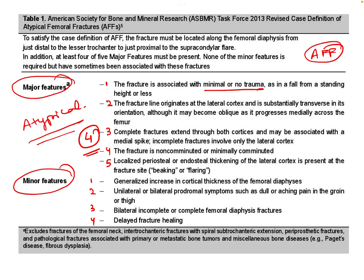The major features are: first, it is associated with minimal or no trauma, such as falling from standing height. Second, the fracture line originates from the lateral cortex and travels transversely, and may become oblique as it progresses medially. So the fracture line originates from the lateral cortex, travels transversely, and while reaching the medial cortex it may become oblique.